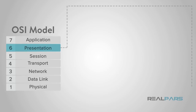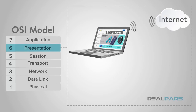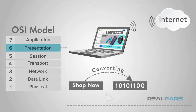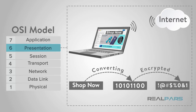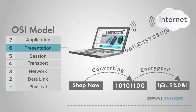The presentation layer, or layer 6, performs the task of syntax processing or converting data from one format to another. For example, consider you're ordering something from an online store. These transactions are typically handled in a secure transmission, which means the data passing between the store or the website application will transmit encrypted data to the presentation layer that will need to be decrypted and processed.